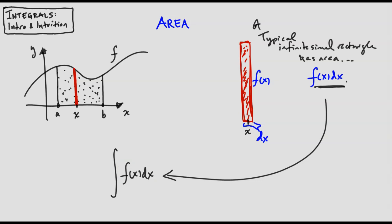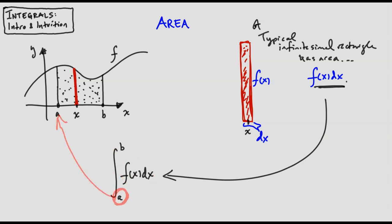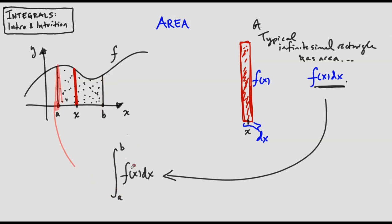There's one last thing in this notation: we write a and b, the so-called boundaries of integration. They tell us when to start and stop our sum. We sum up all the f of x dx's starting when x is a and stopping at b. a tells us start adding here; b tells us stop adding there—picking up all of them, all infinitely many, effectively one for every real number in that interval.